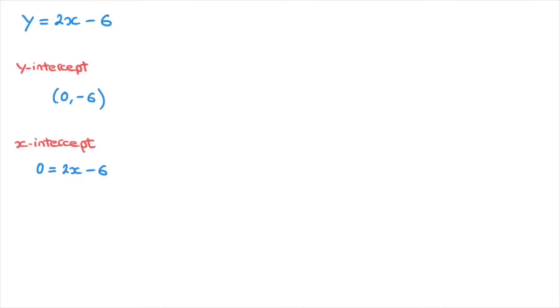So, adding 6 to each side of this equation, we find 6 equals 2x, and we now divide both sides of the equation by 2. That's 6 over 2 equals x. Now, 6 divided by 2 is 3, so 3 equals x. In other words, x equals 3. And this x equals 3 is the value of x at which the line cuts the x-axis. And this allows us to state that the line also passes through the point (3, 0). And those are the coordinates of the x-intercept.